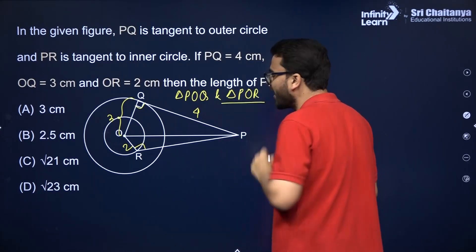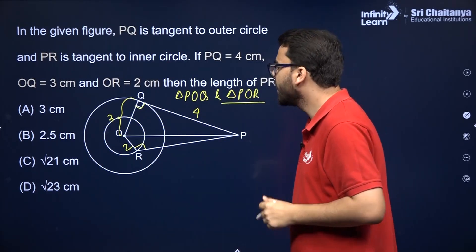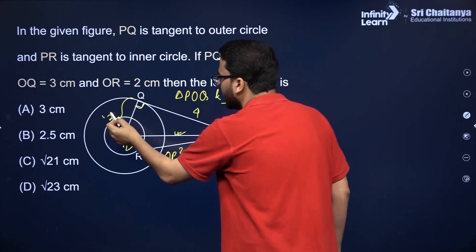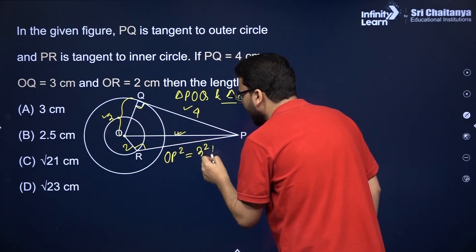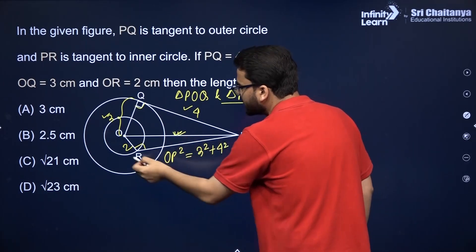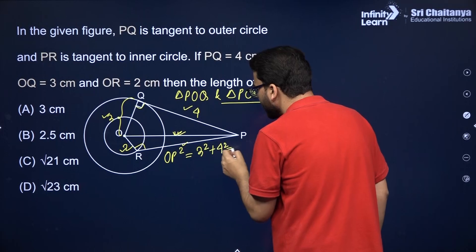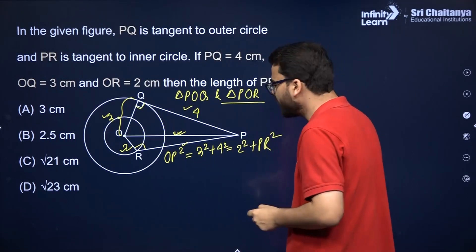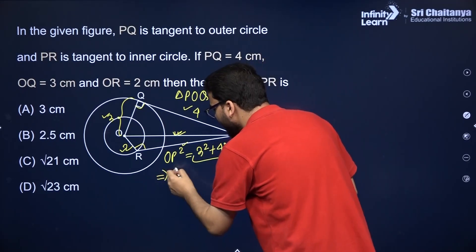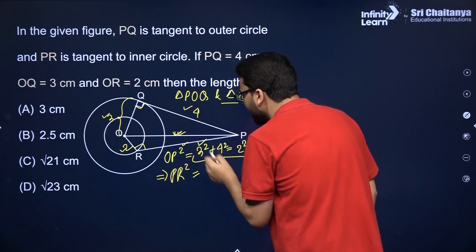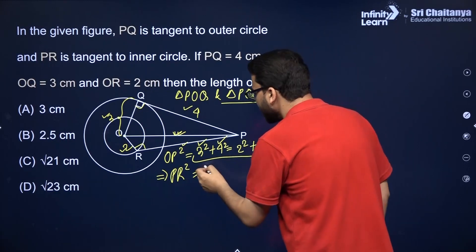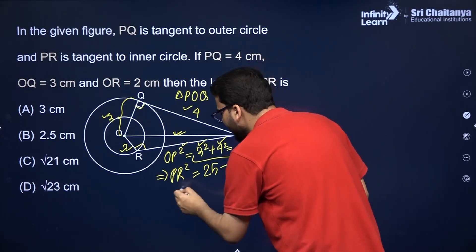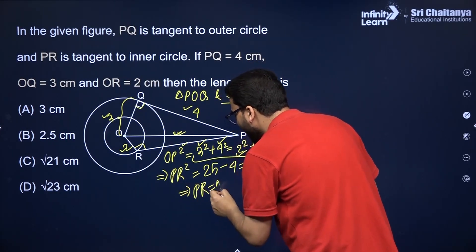Using the Pythagorean theorem: OP² equals 3² plus 4², which is 9 plus 16 equals 25. Similarly, OP² equals 2² plus PR². So PR² equals 25 minus 4, which is 21. Therefore PR equals √21 centimeters.